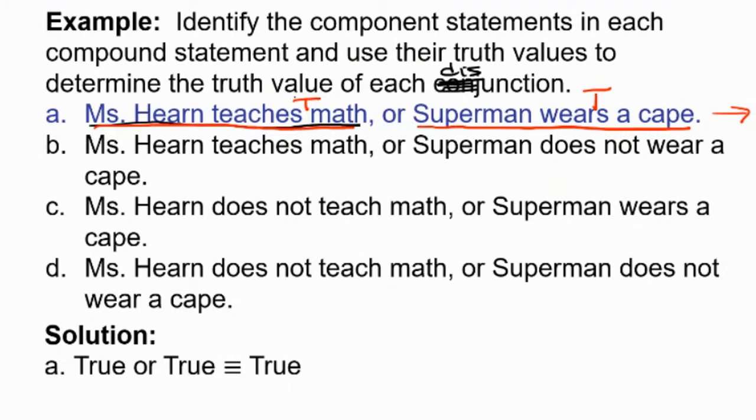How about Ms. Hearn teaches math or Superman does not wear a cape? Truth value of the first component, Ms. Hearn teaches math. That's true, right? But it's false to say Superman does not wear a cape. So if I walk up to you and say Ms. Hearn teaches math or Superman does not wear a cape, have I lied? Or is really telling you that at least one of these is true. Is at least one of these true?